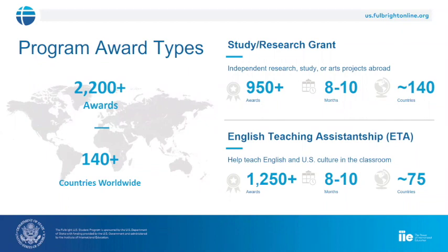For the U.S. Student Program specifically, there are over 2,200 awards for 140 different countries. Generally, grants fall into two categories: open study and research awards, and English Teaching Assistantships. For the study/research awards, these are very open for you to create your own program — both the scope and depth — tailored to what you're wanting to do in the host country. You might be proposing independent study and research abroad, doing independent research while taking classes as a non-degree student, or enrolled in a specific graduate degree program you're hoping to earn abroad.